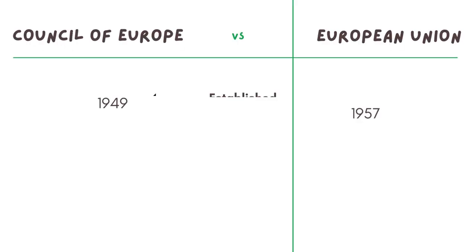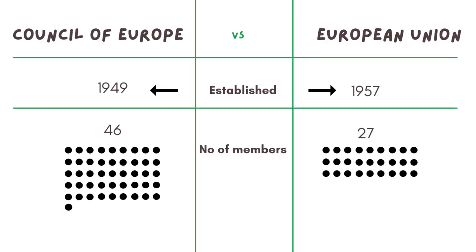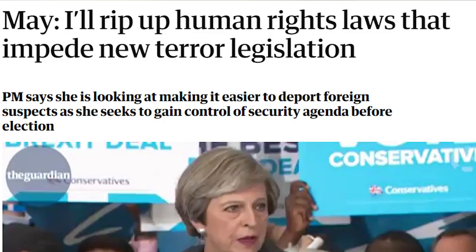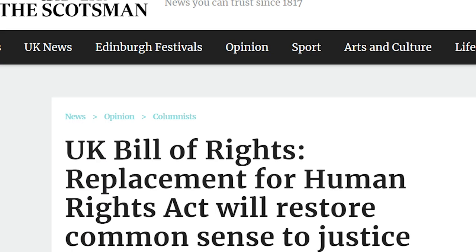The European Convention on Human Rights is not part of the European Union. It is part of the Council of Europe, which is still 46 countries and about 185 million people. The present government hates the Human Rights Act and the European Convention on Human Rights. Theresa May called it a terrorist charter. And what the Tories want is to replace it with a British Bill of Rights, which would mean repealing the Human Rights Act — so that is very much on the agenda.